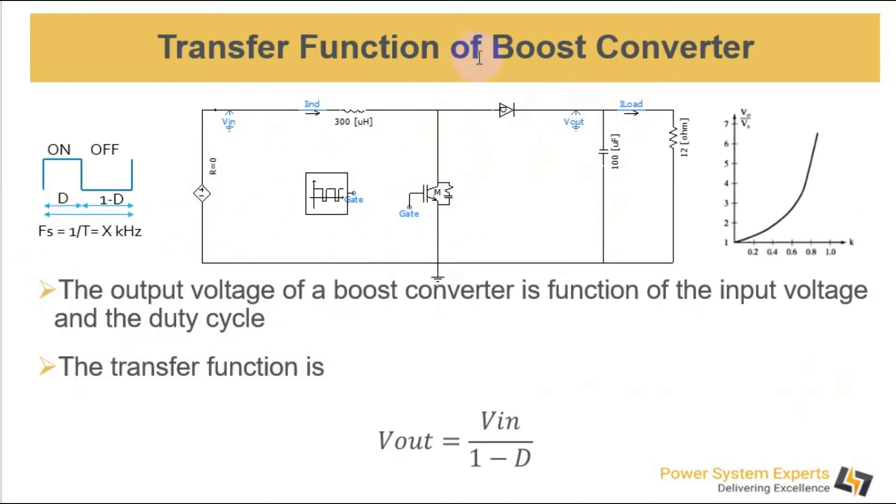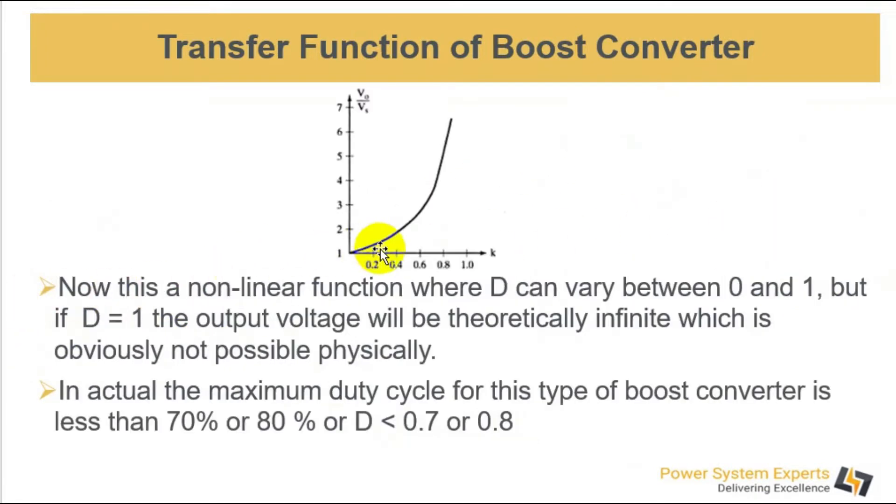The transfer function of Boost Converter is a function of input voltage and the duty cycle. It's given here V out equals V in divided by 1 minus D. Here you can see a plot of this transfer function. D can vary between 0 and 1.